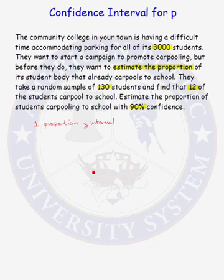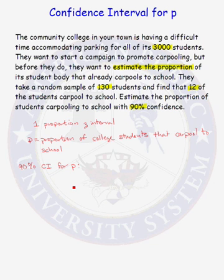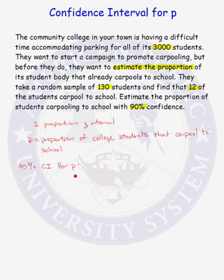We want to estimate the proportion of students carpooling to school with 90% confidence. We are estimating a population proportion, so we should construct the one proportion Z interval. Let's define P, our population proportion: P is the proportion of college students that carpool to school. We want to find the 90% confidence interval for P. Remember, confidence intervals are for population parameters — we never use a sample statistic here. This quantity is always a population parameter.